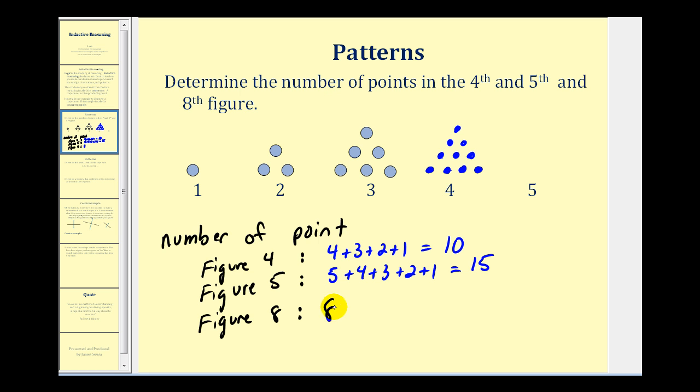So for the eighth figure, we'd have eight plus seven plus six plus five plus four plus three plus two plus one. Of course, we could add all of these up, or to take a shortcut, we could try to pair these up, meaning the first number plus the last number would be nine. Seven and two would be nine, six and three would be nine, and five and four would be nine. So we have four pairs of nine, and four times nine would give us thirty-six. So there's more than one pattern to notice as we use inductive reasoning to answer these questions.